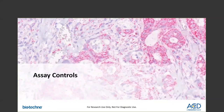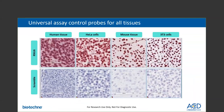In the next slide, I'll talk about our recommended assay controls. The new assay to detect small RNAs will offer universal positive and negative control probes. Strong nuclear U6 signal is observed in a variety of tissues, including human and mouse tissues, HeLa, and 3T3 cell pellets. A universal scramble probe is also recommended as an assay control to demonstrate the specificity of the assay across species and samples.